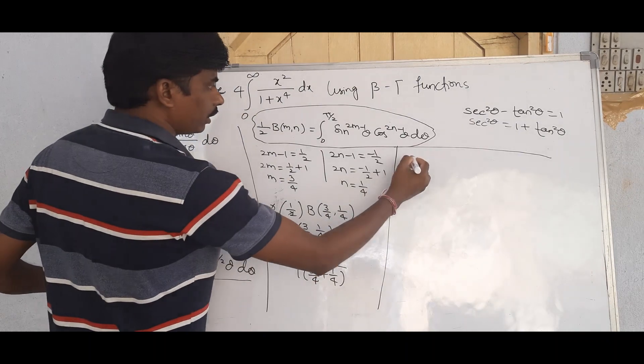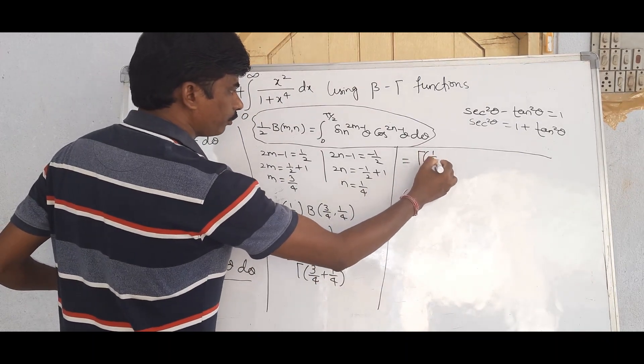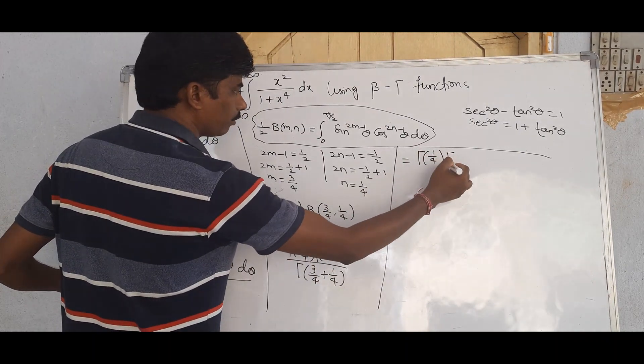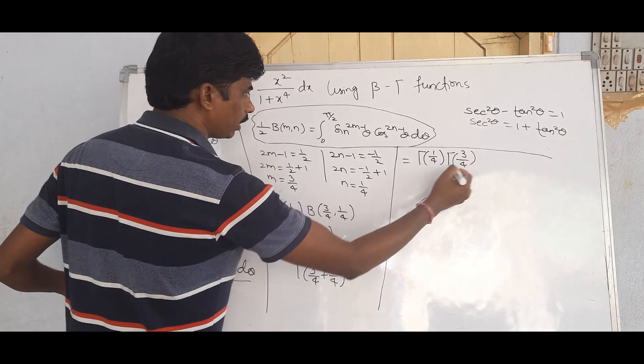Since Γ(1) = 1, the expression simplifies to Γ(1/4) · Γ(3/4).